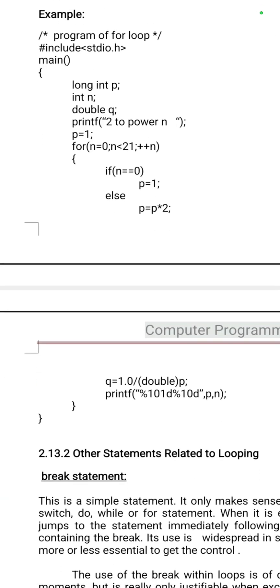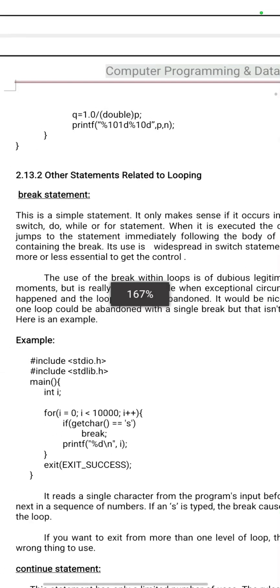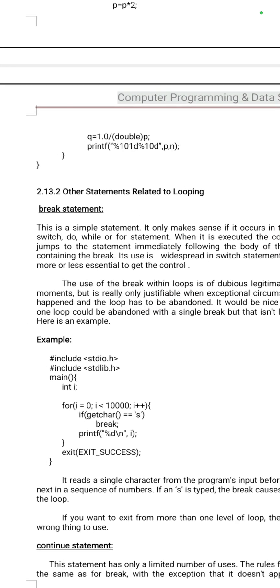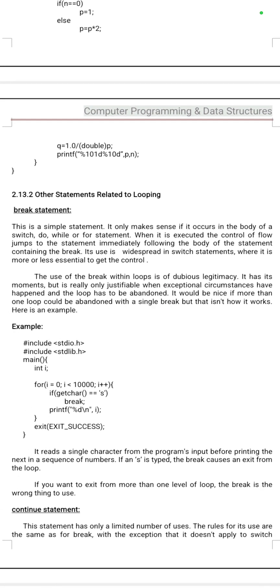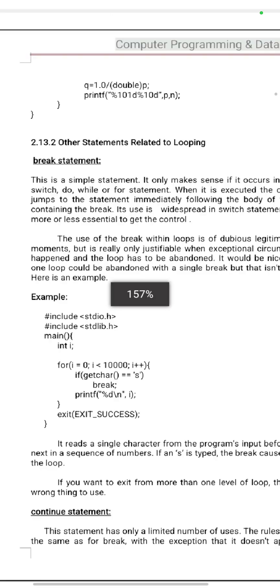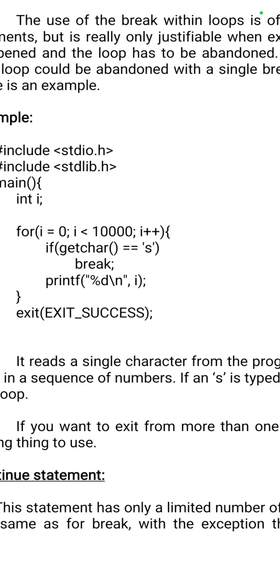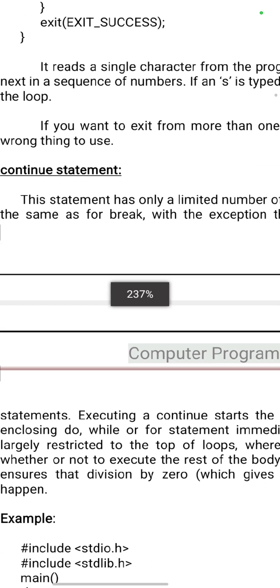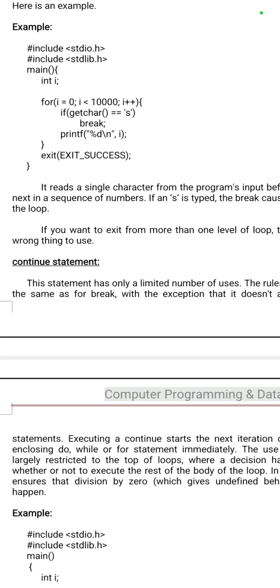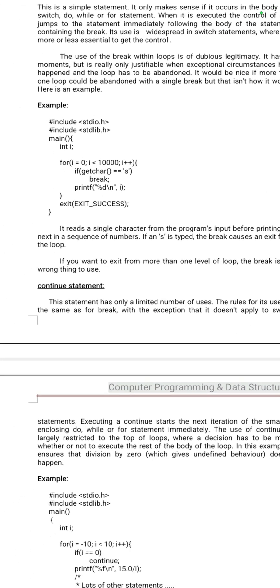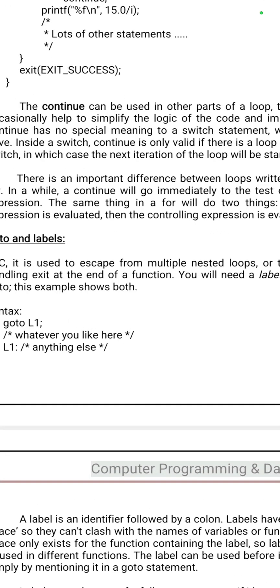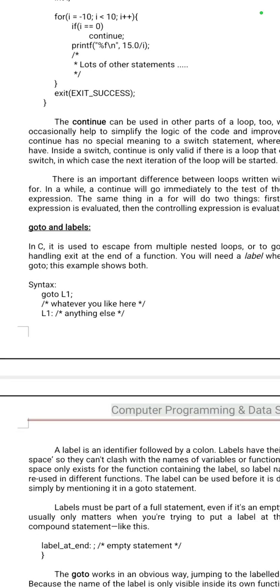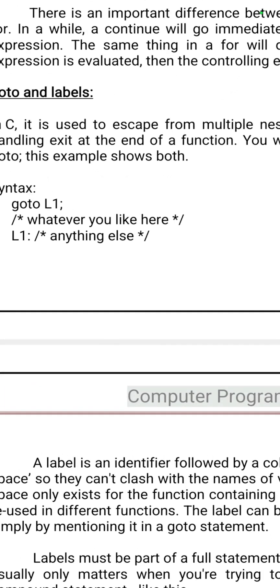The difference between while and do-while is important: in do-while, first do it then check the condition. Break statement is used to pre-exit from a loop. Continue statement skips a part and goes to the next iteration. Goto statement is also there — it goes to a particular block.